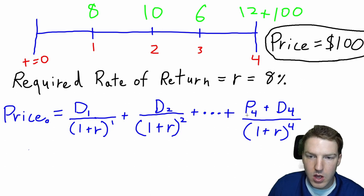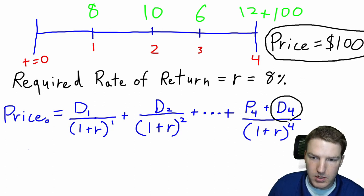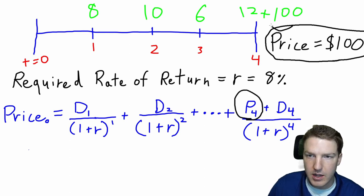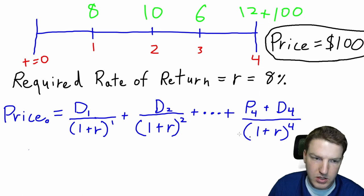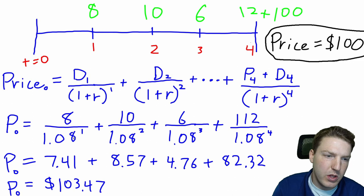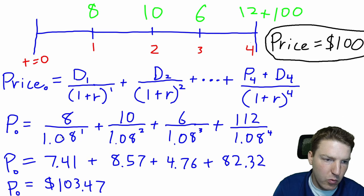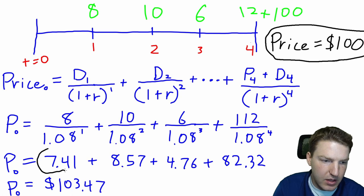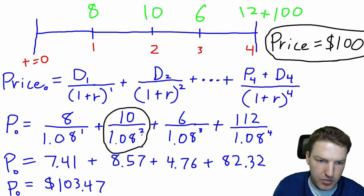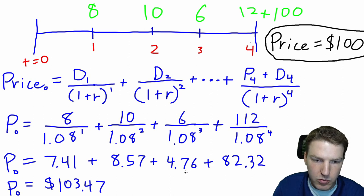The last period is a bit different because we have the dividend at time four, which is twelve dollars, plus the expected price of the stock at time four, which is one hundred dollars, and we discount them all back. The first dividend of eight dollars discounted back by 1.08 to the power of one gives a present value of seven dollars and forty-one cents. The second dividend of ten dollars discounted back for two years gives a present value of eight dollars and fifty-seven cents, and we do that for the third and fourth cash flows as well.